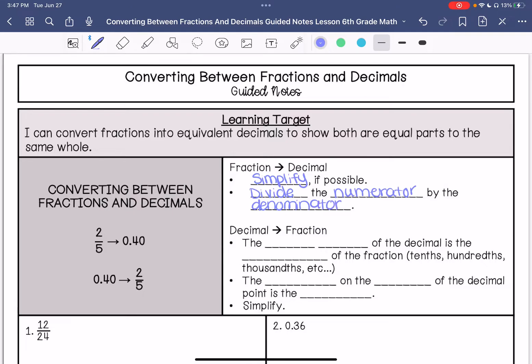If you are going to convert a decimal to a fraction, the place value of the decimal is the denominator of the fraction. If it's the tenths, then it's like five tenths. If it's 0.05, that would be five hundredths. It just depends what place value it's in. Then the number on the right of the decimal point is the numerator, and you want to make sure you simplify if possible.